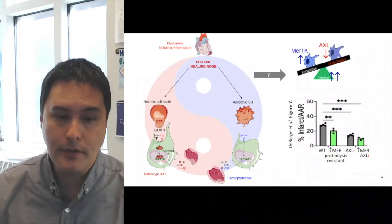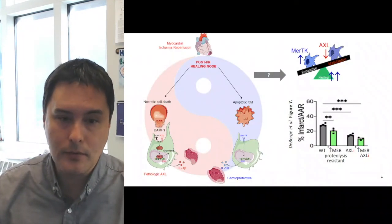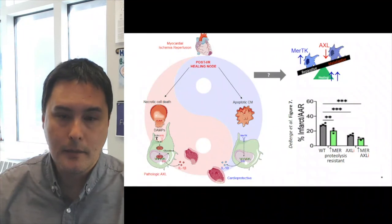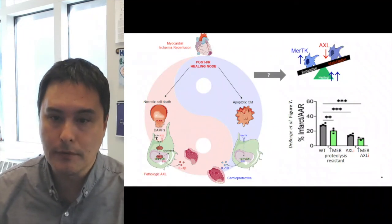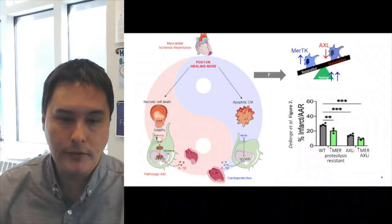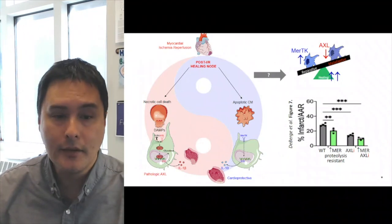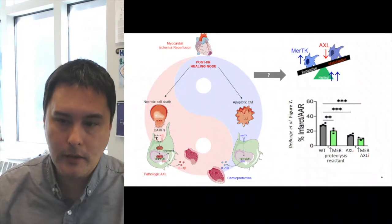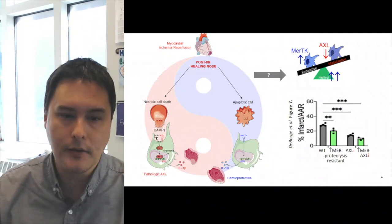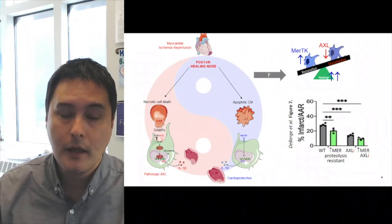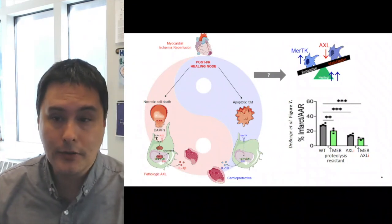Now if we put this cell intrinsic model into a more physiologic model of myocardial ischemia reperfusion, we propose these damage associated molecular patterns come from necrotic cardiomyocytes acutely after ischemia reperfusion. This is in contrast to our previous studies in which MERTK was found to be cardioprotective through the recognition of apoptotic cells and the secretion of factors including IL-10.